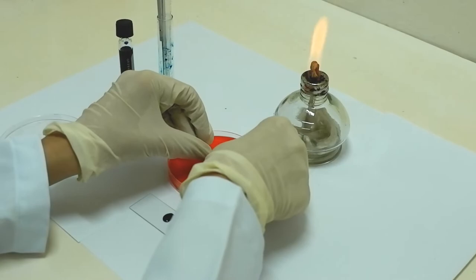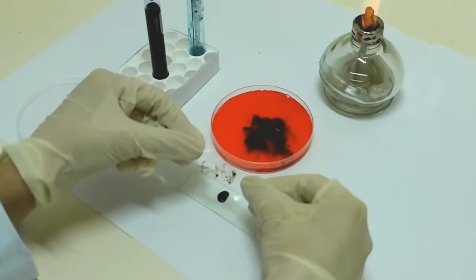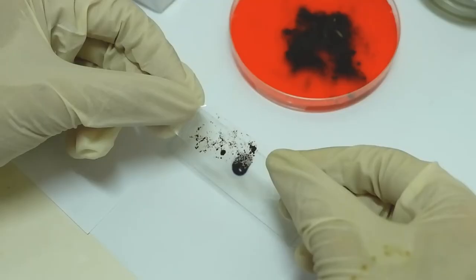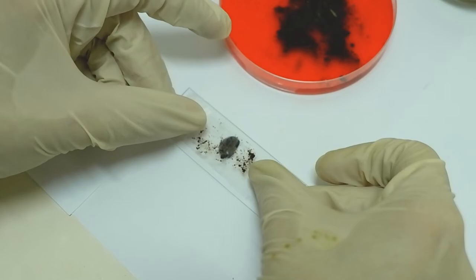Touch the sticky side on the top of a mature fungal colony to allow sporulation structures to stick to the tape.